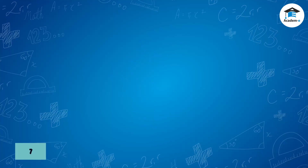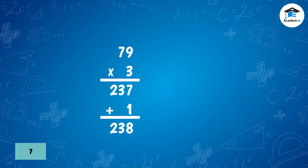Let's check if the quotient is correct. Multiply the quotient and divisor: 3 times 9 is 27, carry 2; 3 times 7 is 21, plus 2 is 23. Add the remainder 1: 237 plus 1 equals 238. Correct!